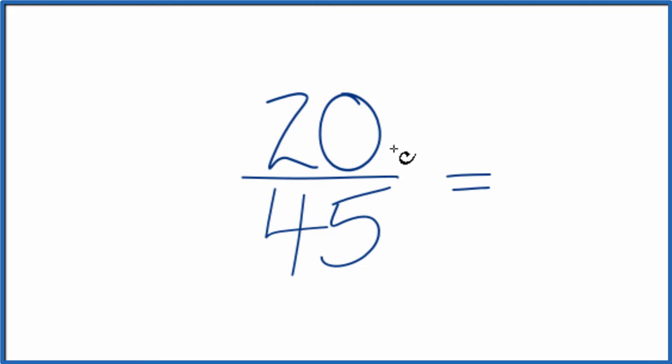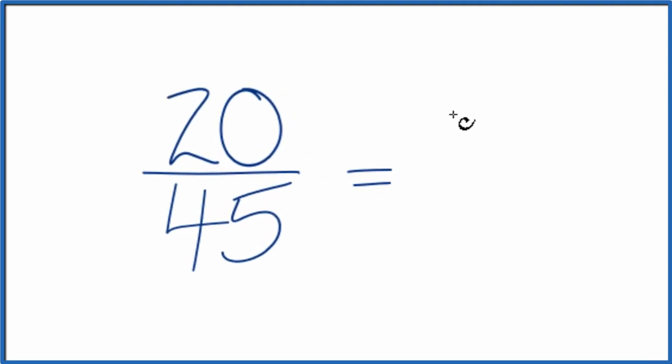I know that 5 goes into 20 and 45. So I'll divide 20 by 5. 20 divided by 5 is 4. And then 45 divided by 5 gives me 9.